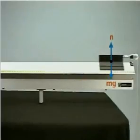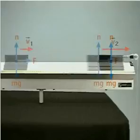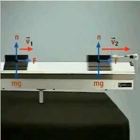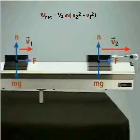The net work done in changing the mass's speed from V1 to V2 is easy to calculate. The work is one-half m times the quantity V2 squared minus V1 squared.